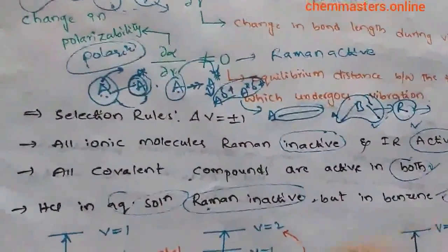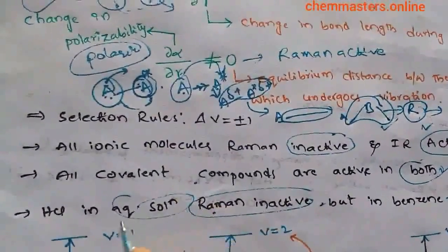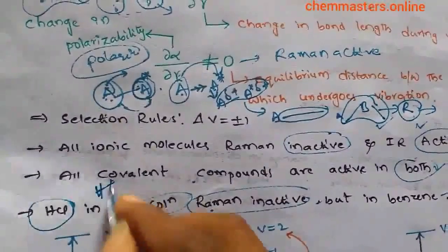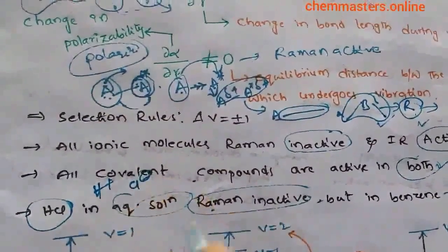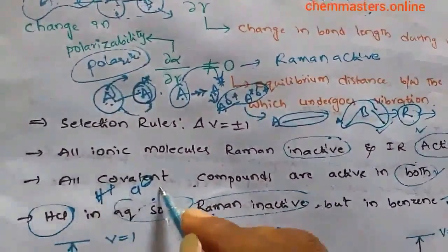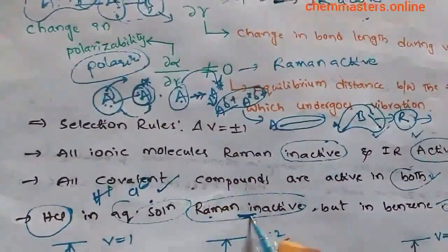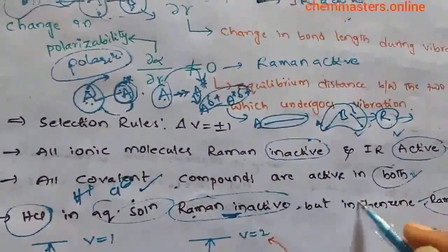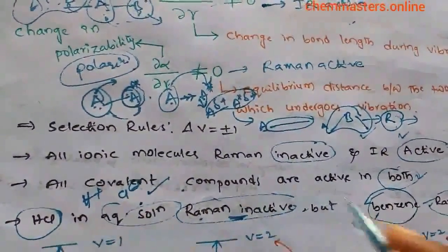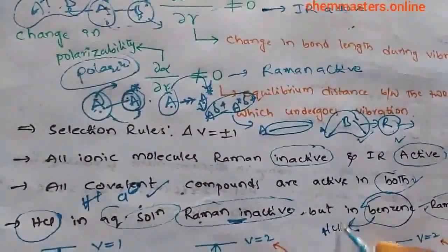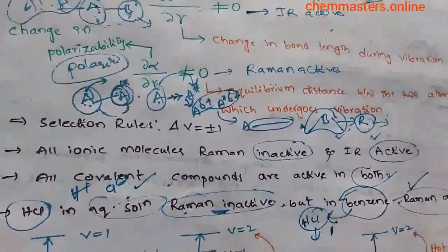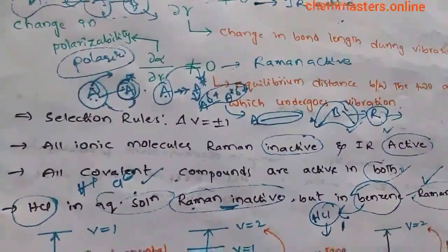In aqueous solution, HCl completely ionizes into H⁺ and Cl⁻, so it is IR active but Raman inactive. In benzene, which is a non-polar solvent, HCl does not completely ionize — it undergoes polarization instead, which makes it Raman active.